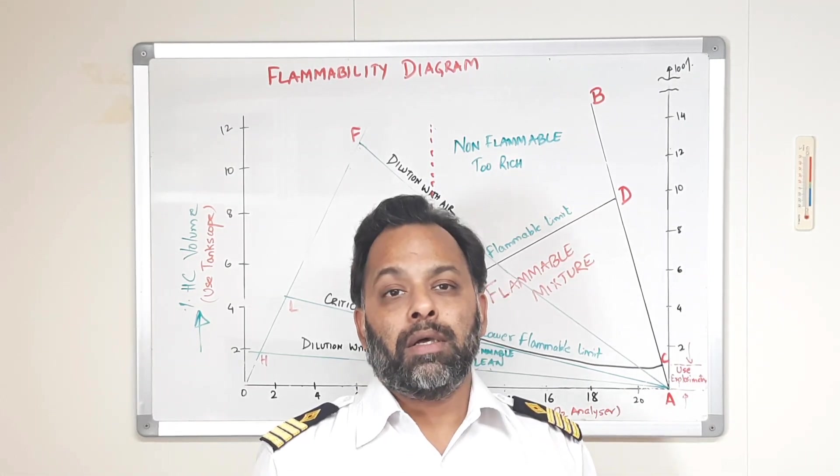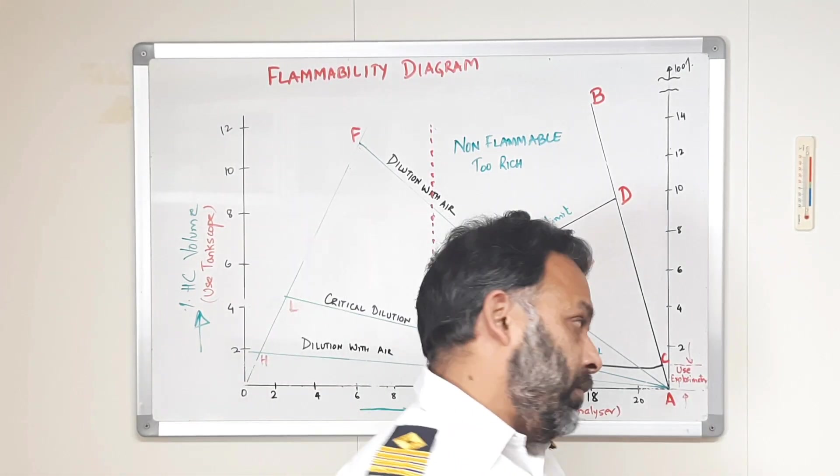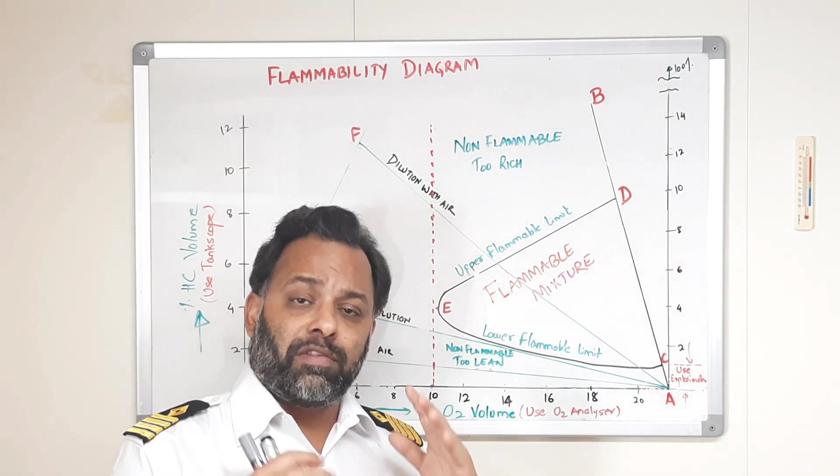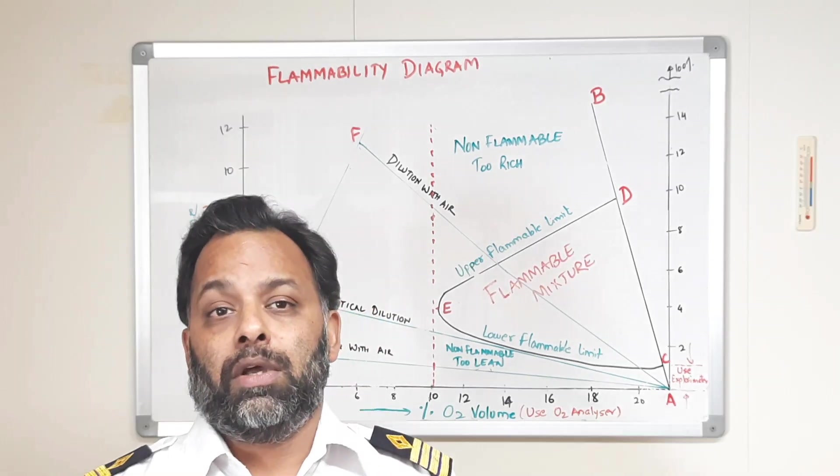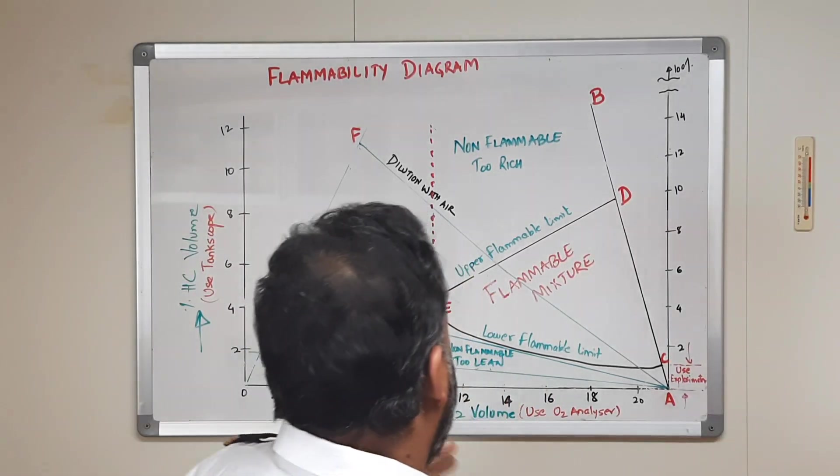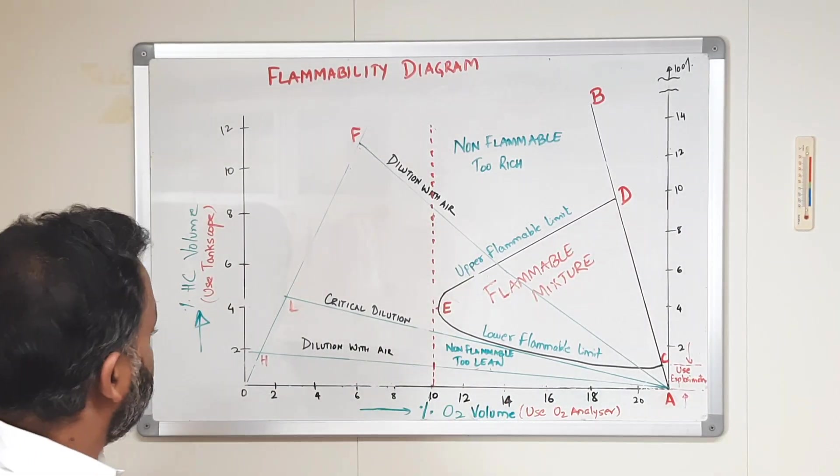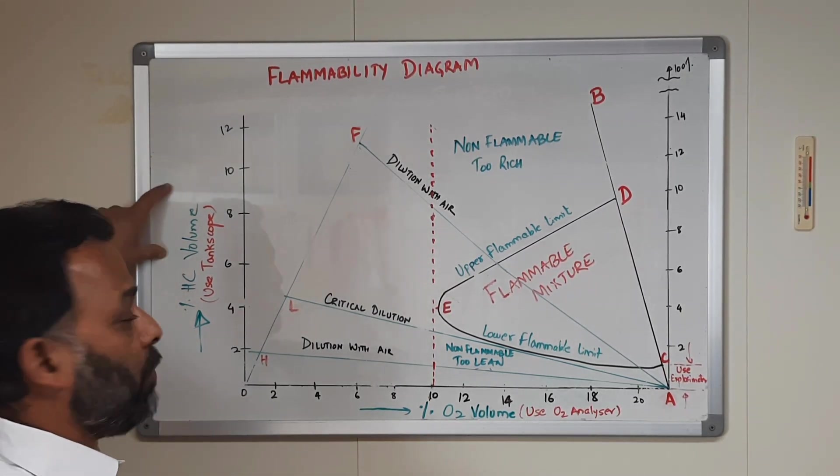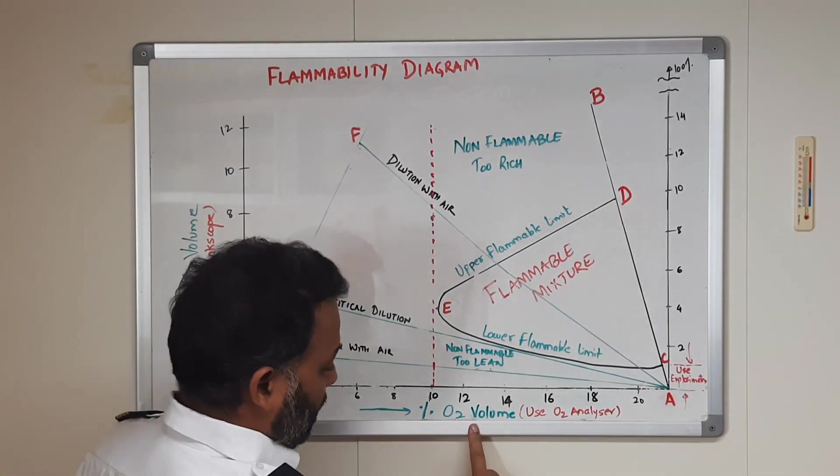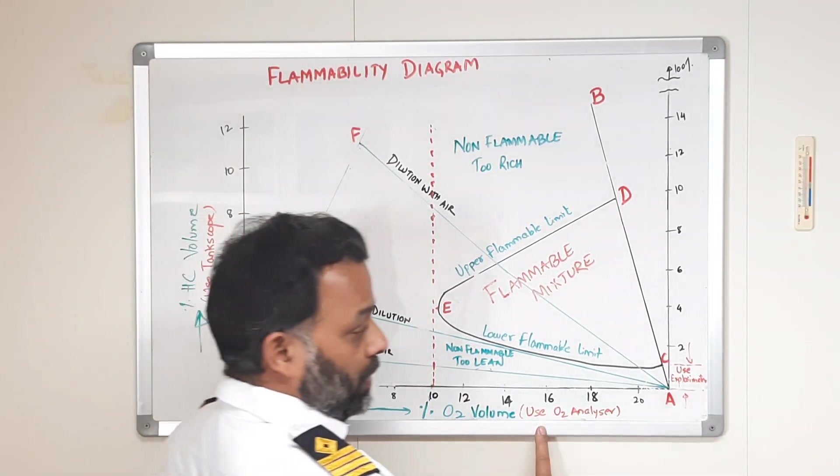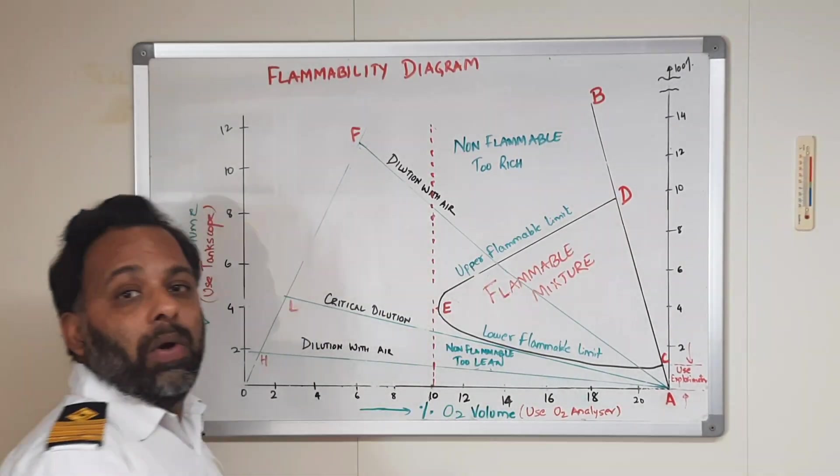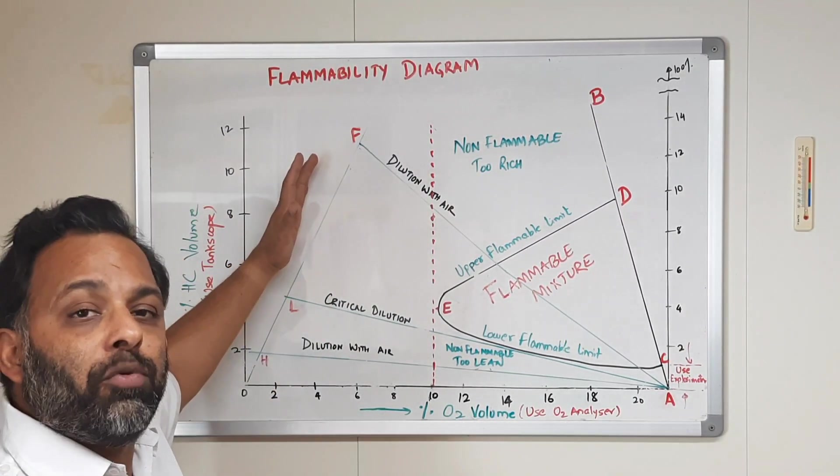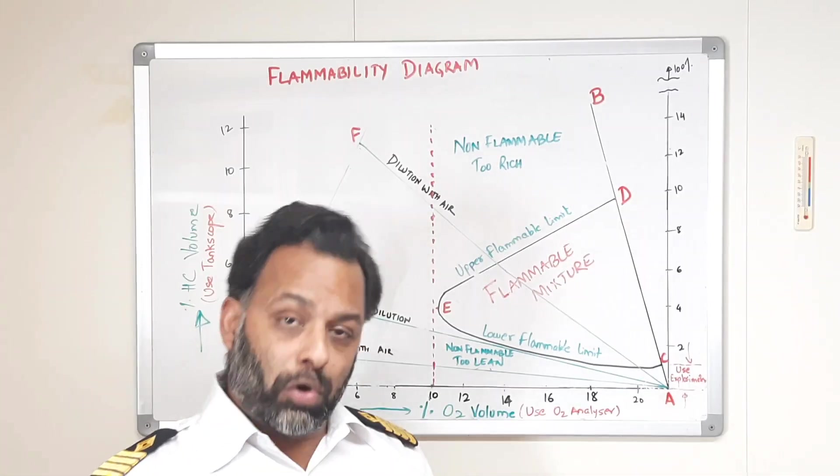This flammability diagram is very very important for the safe operation, safe cargo operation on tankers. Let's consider this diagram. On this y-axis we have percentage hydrocarbon in volume, on the x-axis we have percentage oxygen in volume. This flammability diagram is different for different cargoes. We are just assuming the flammability diagram for crude oil.